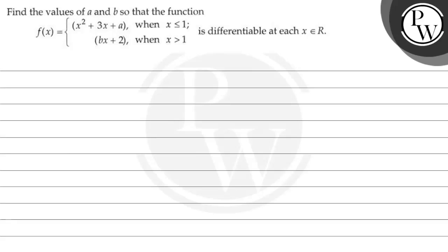Hello! Let's read the given question. The question states: find the values of a and b so that the function f(x) equals x squared plus 3x plus a when x is less than or equal to 1, and bx plus 2 when x is greater than or equal to 1, is differentiable at each x belonging to real numbers.